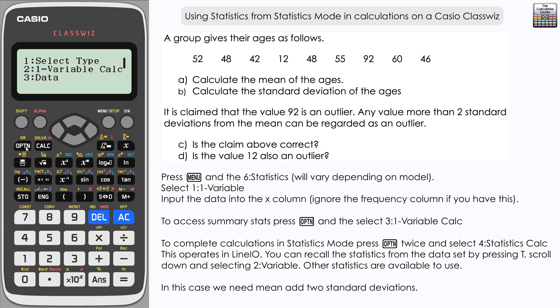Then we want to recall the standard deviation. Press option, scroll down, 2 for variable, and then sigma X, which is 3. Press equals, and we have 89.55.